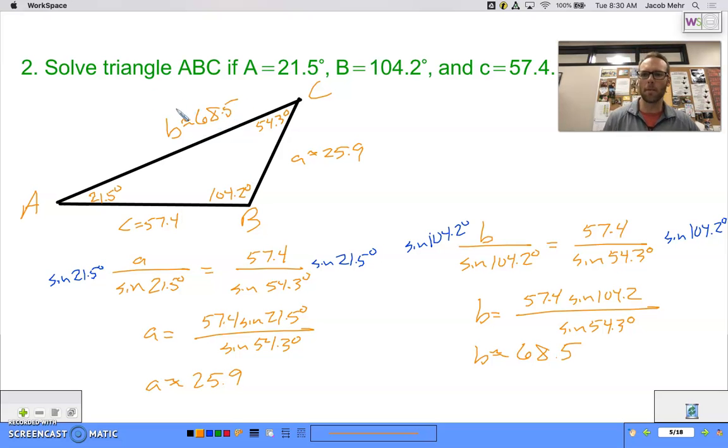There we go. That makes sense to me, right? Isn't our longest side opposite our biggest angle? That's what we have. We have our shortest side opposite our smallest angle. So if I do just a quick mental check, I feel pretty good about that.